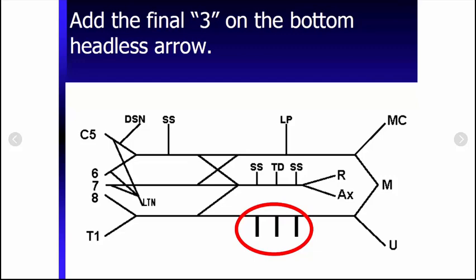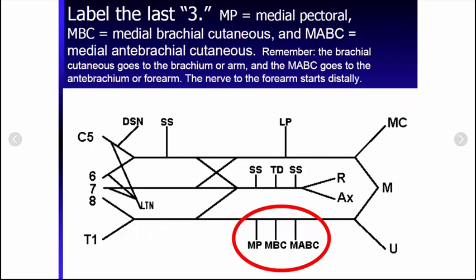Now we add in three final arrows to the bottom. So this would be, if that's the lateral cord, that is the posterior cord, that's the medial cord. And then let's drop some labels on those. That would be the medial pectoral, the medial cutaneous nerve of the arm, and the medial cutaneous nerve of the forearm. So medial pectoral, medial brachial cutaneous, and medial antebrachial cutaneous.